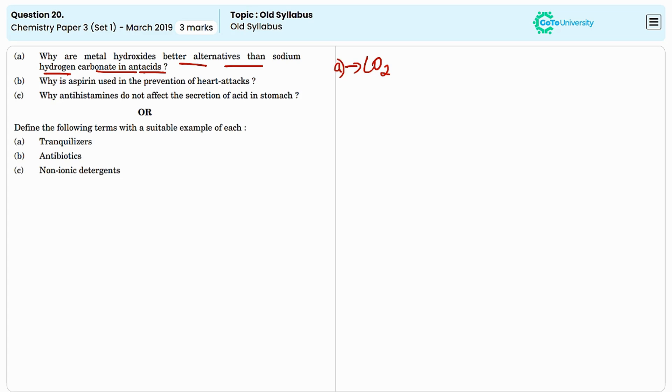The second one is: why is aspirin used in the prevention of heart attacks? Aspirin is used in the prevention of heart attacks because it acts as a blood thinner.